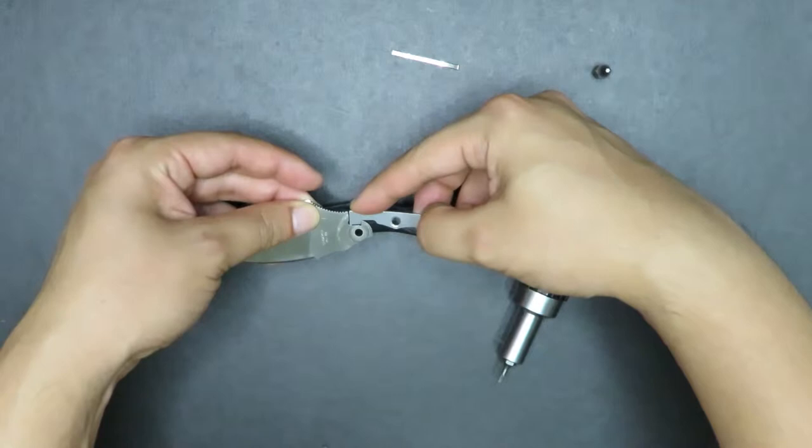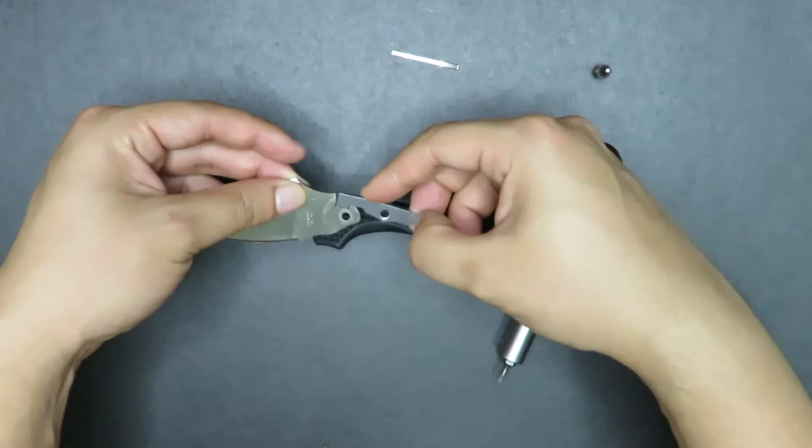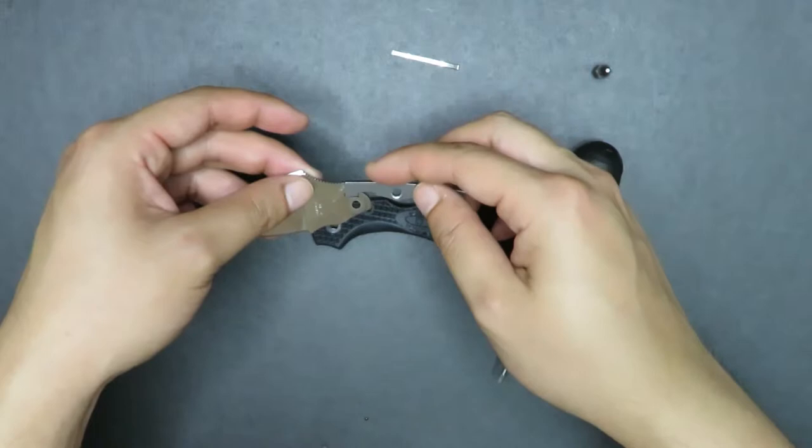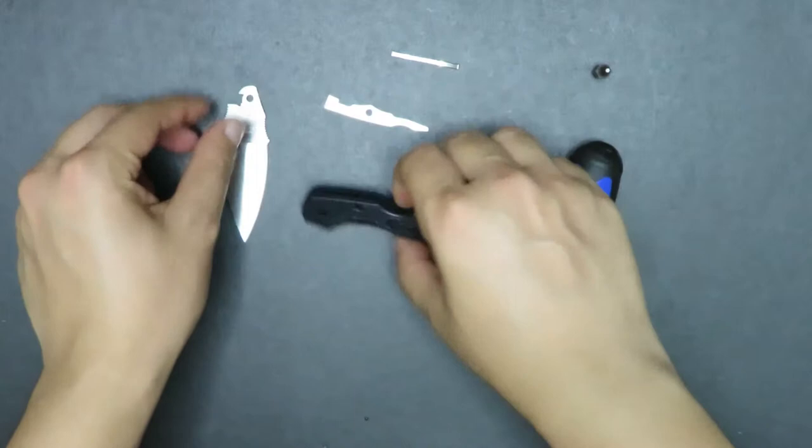Now based on Blade HQ's experiment, the back lock is the strongest locking system there is compared to, they tested a liner lock, a frame lock and so forth. Now they did not manage to test an access lock, but they did test every other lock that I'm aware of. And then it locks in here.